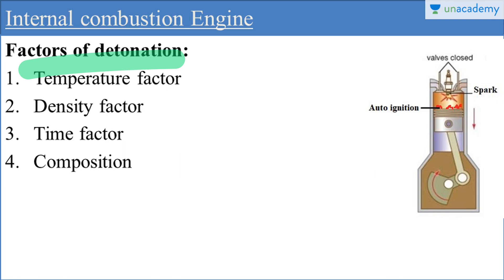There are different factors or variables we generally consider during the working of an SI engine which affect detonation. We generally consider four conditions which help to avoid detonation in a spark ignition engine. Those four conditions are: lower temperature of the gas, low density, low ignition delay, and non-reactive composition.